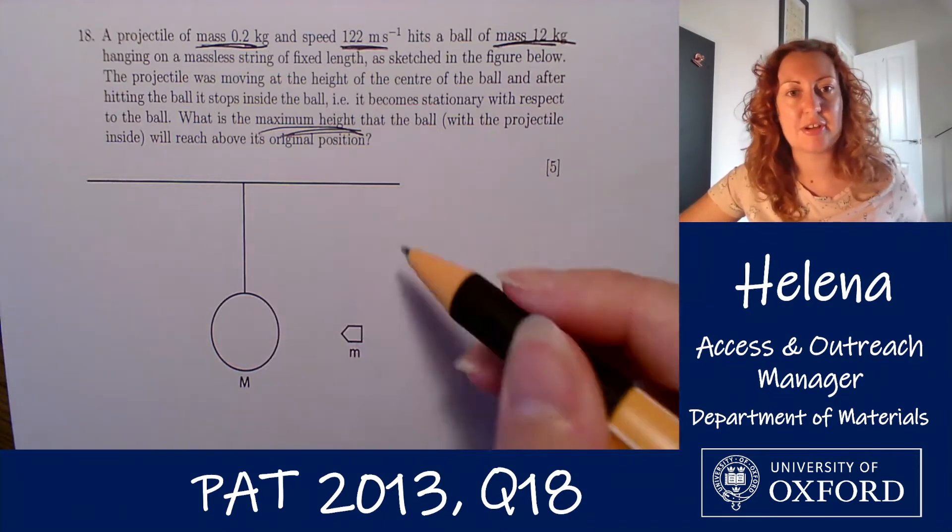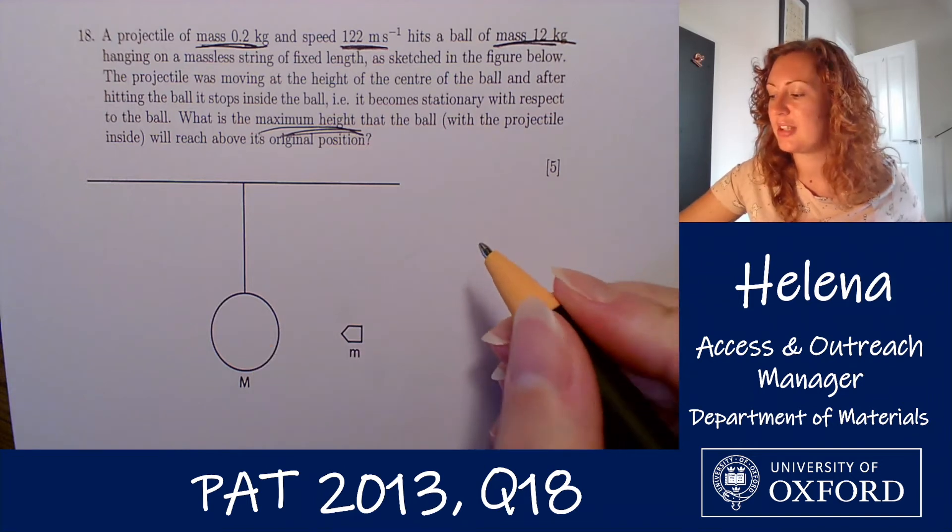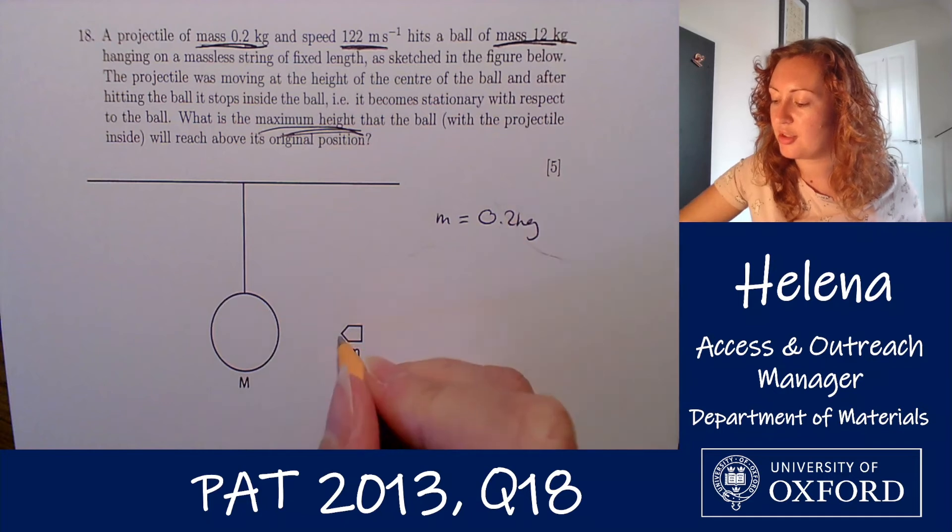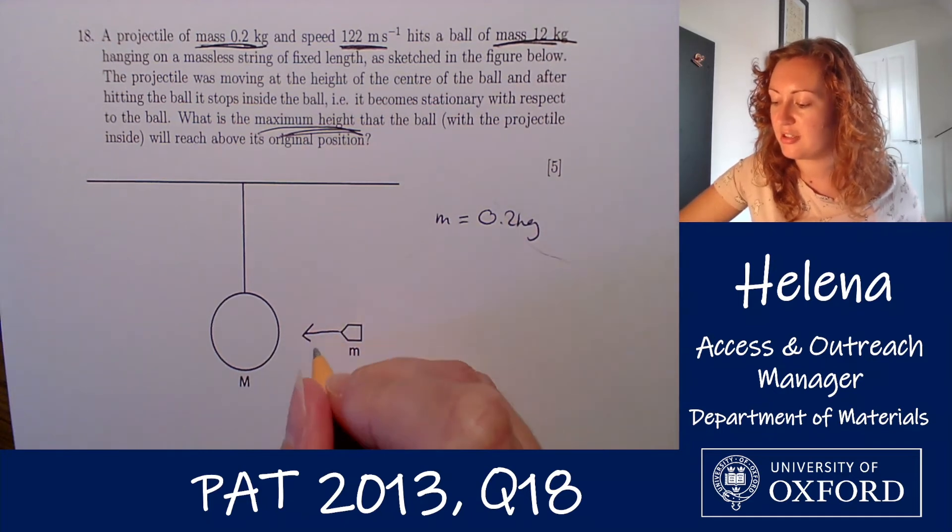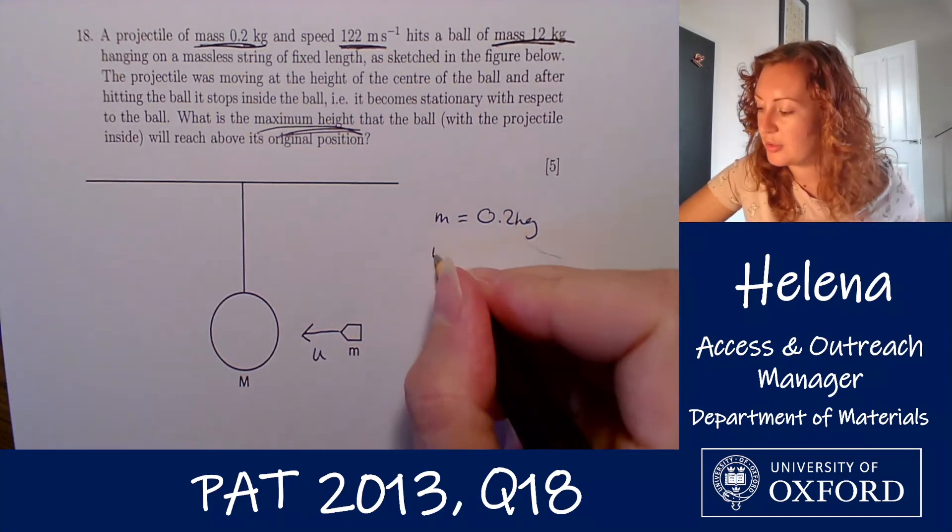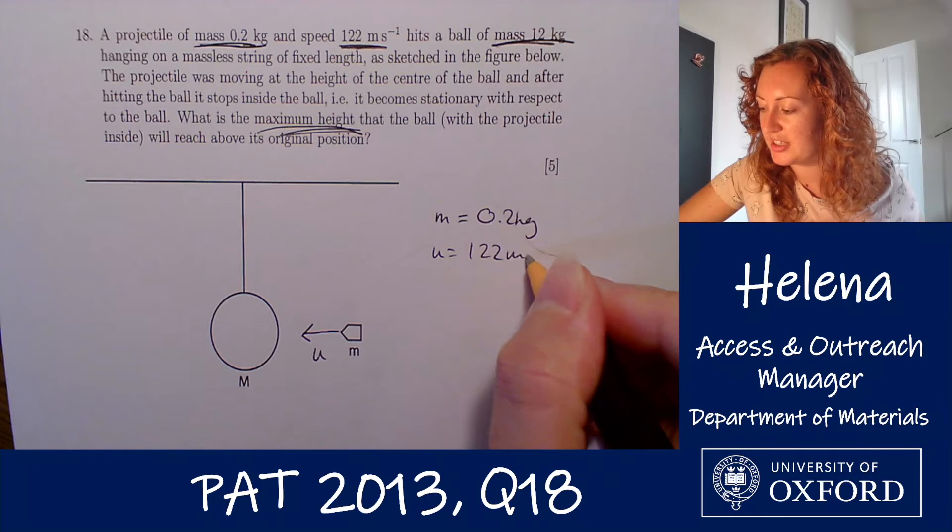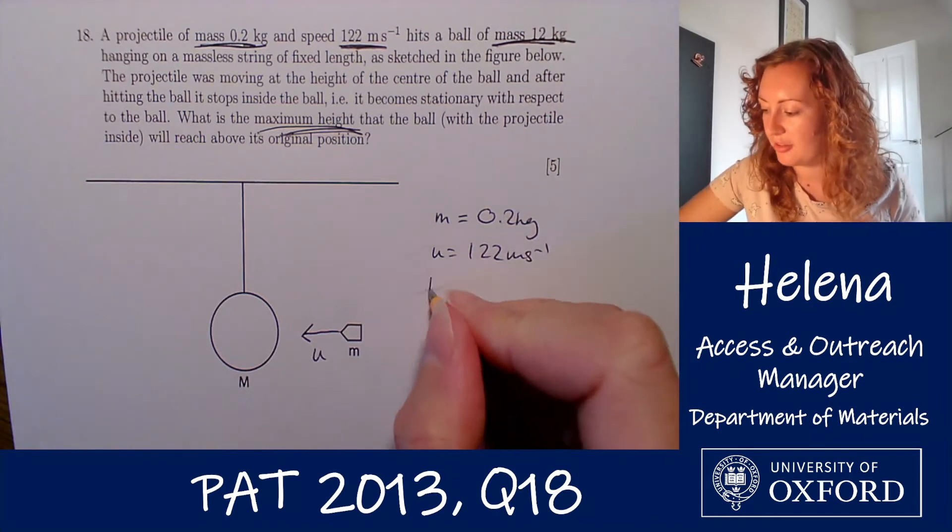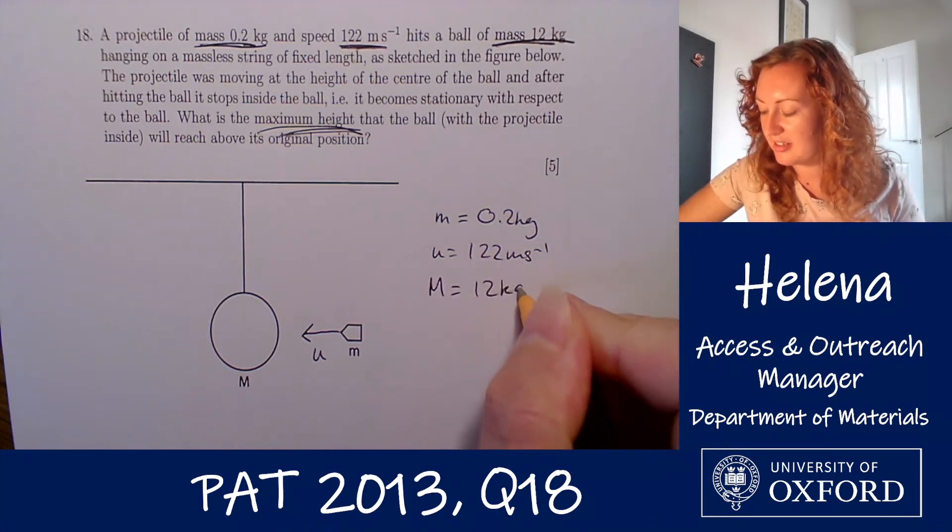So this diagram shows the before of the collision. We have our projectile mass little m which is 0.2 kilograms moving in this direction with a speed u which we are told is 122 meters per second, and that hits our ball of mass 12 kilograms here.